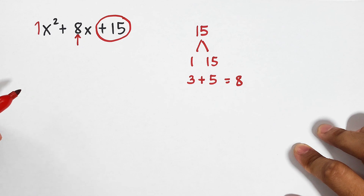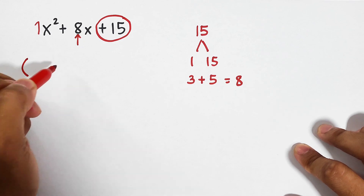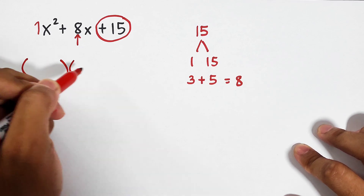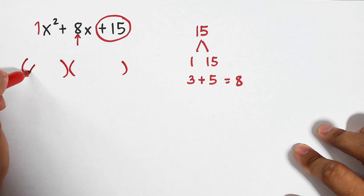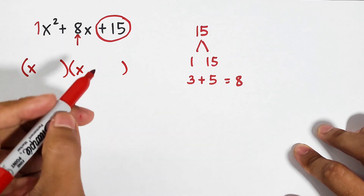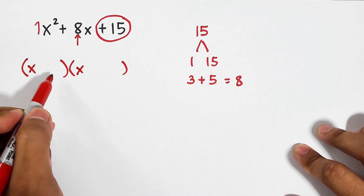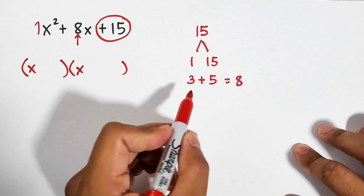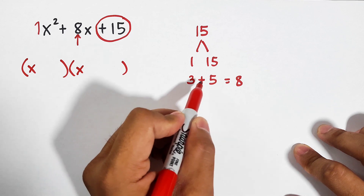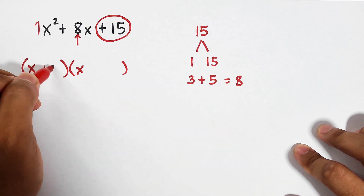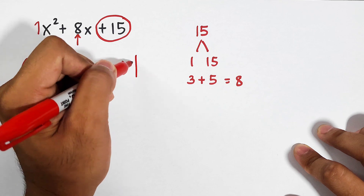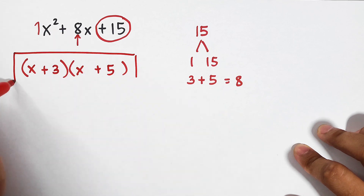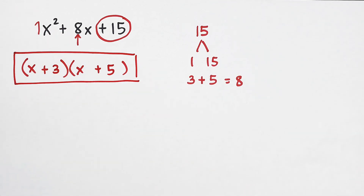So how are we going to factor this one? We need to prepare parentheses. Since this is 1x squared, it is just x and x. As for the factors of the binomials, we have 3 and 5 — that is plus 3 and then plus 5. This is now the factors of the given trinomial.